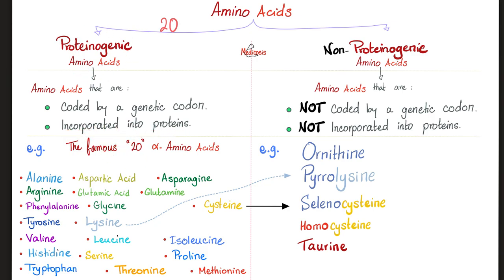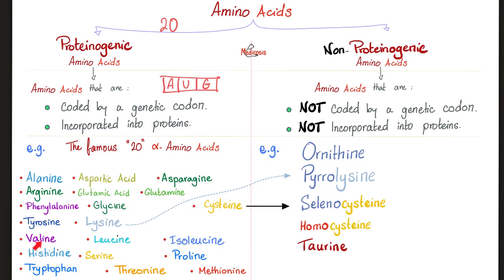What are these 20 amino acids? The famous alanine, aspartic acid, asparagine, arginine, glutamic acid, glutamine. We have aspartic acid and asparagine; glutamic acid and glutamine; phenylalanine, glycine, tyrosine, lysine. Valine, leucine, isoleucine — you need to remember these three together. Histidine, cysteine, serine, proline, tryptophan, threonine.